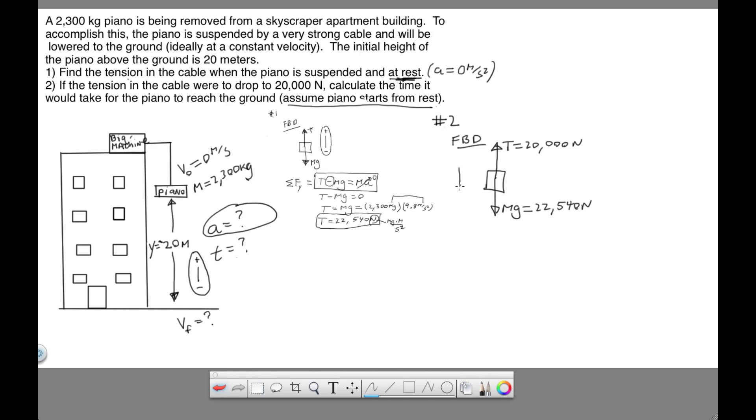mg is still going to be 22,540. And our sign convention, again, down is negative, up is positive. There's the free body diagram.